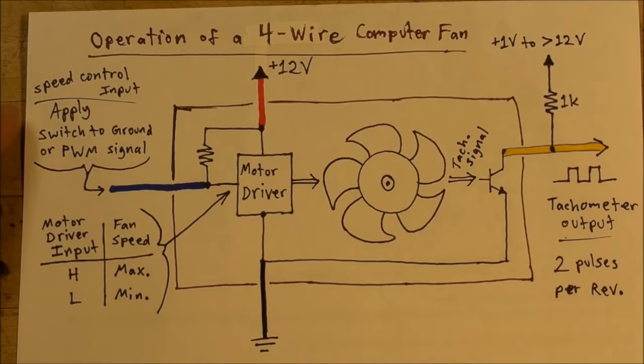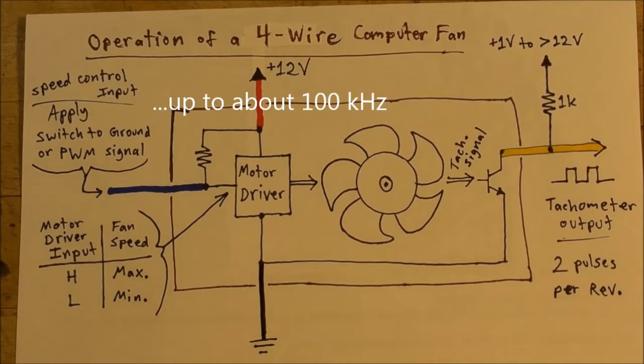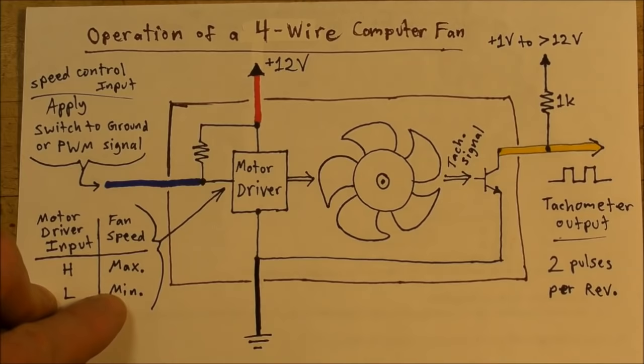And of course, you can hook this up to a function generator or some other signal source, a square wave, and you can pulse width modulate it to get any speed in between the minimum and the maximum.